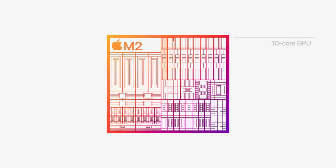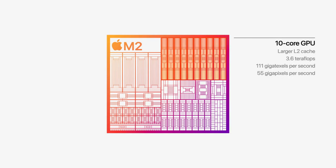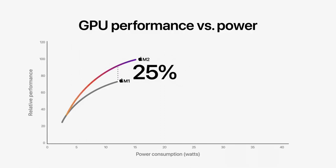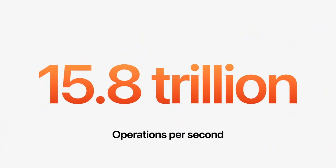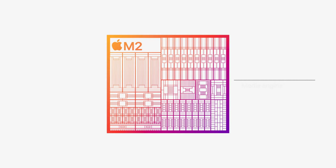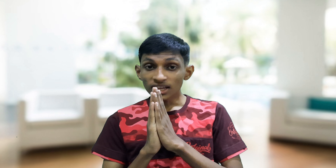The M2 has a 10-core GPU which performs 25% higher and 35% higher at peak on graphics. The neural engine can process up to 15.8 trillion operations per second. The media engine has a higher bandwidth video decoder that supports 8K H.264 and HEVC video.